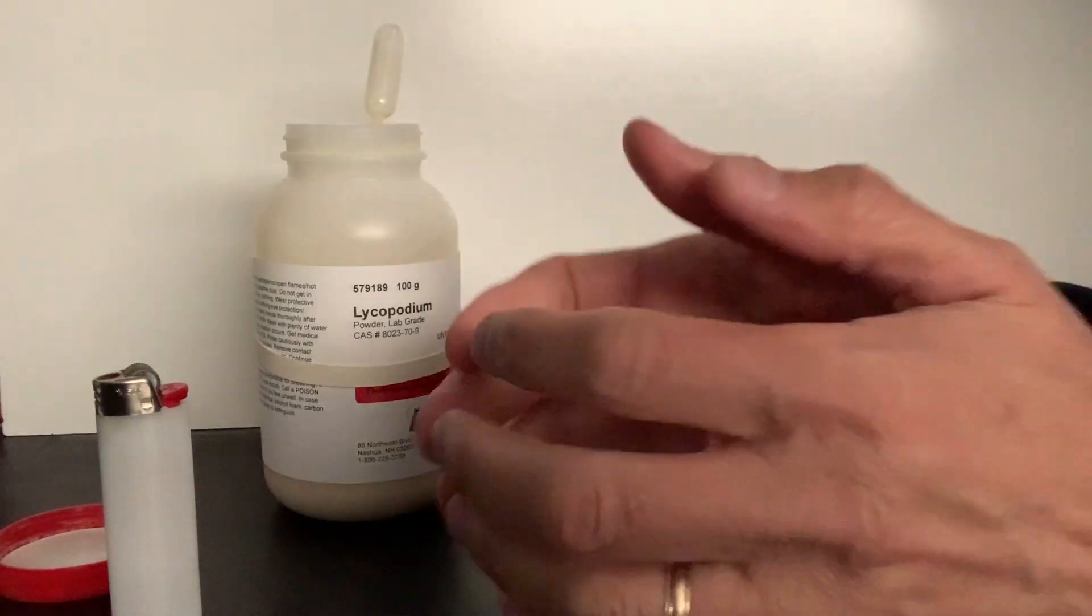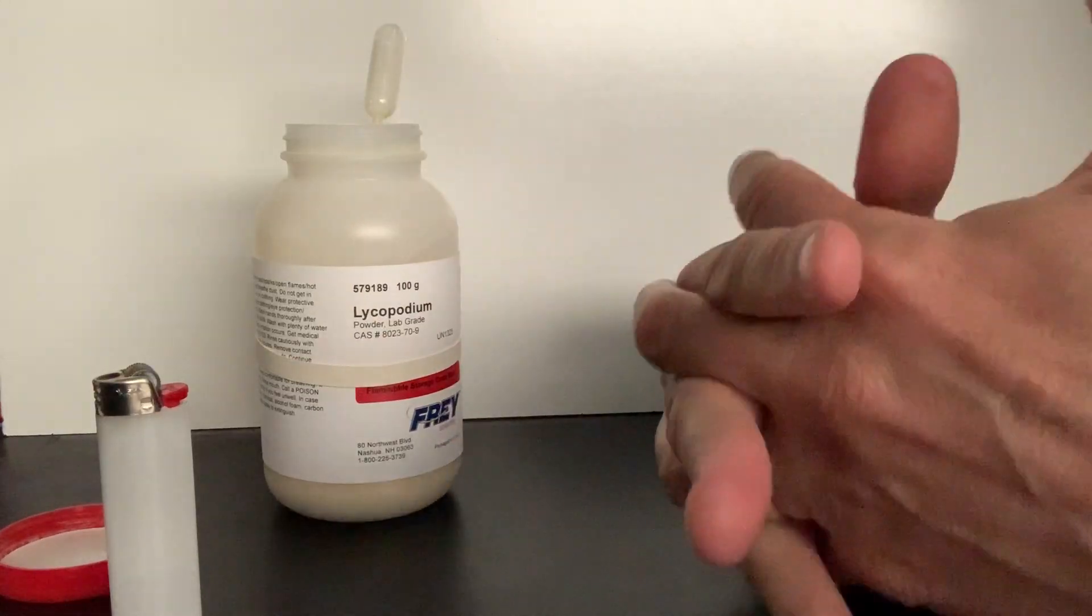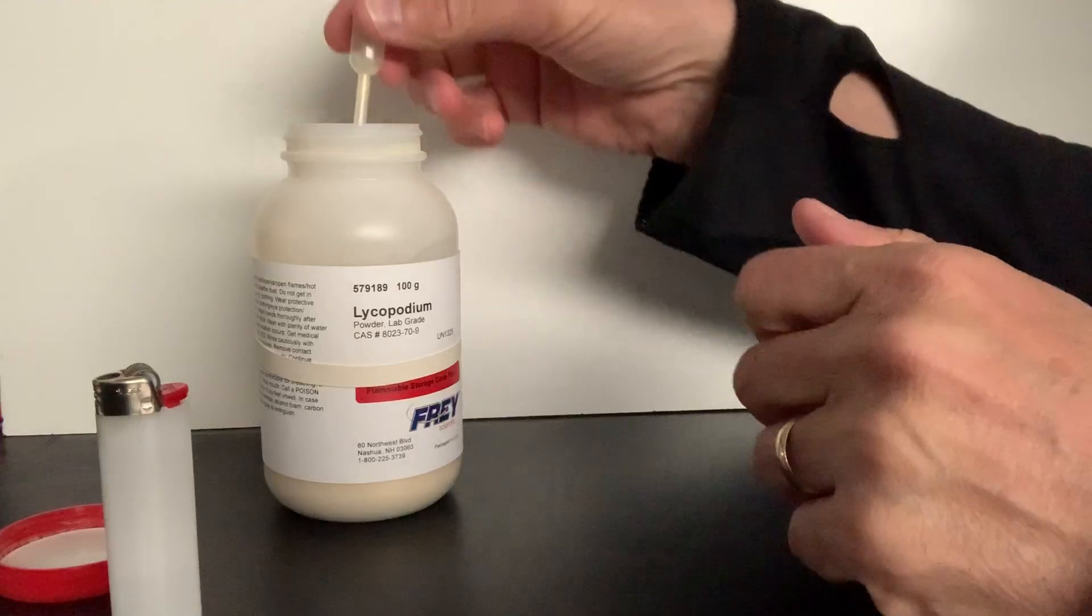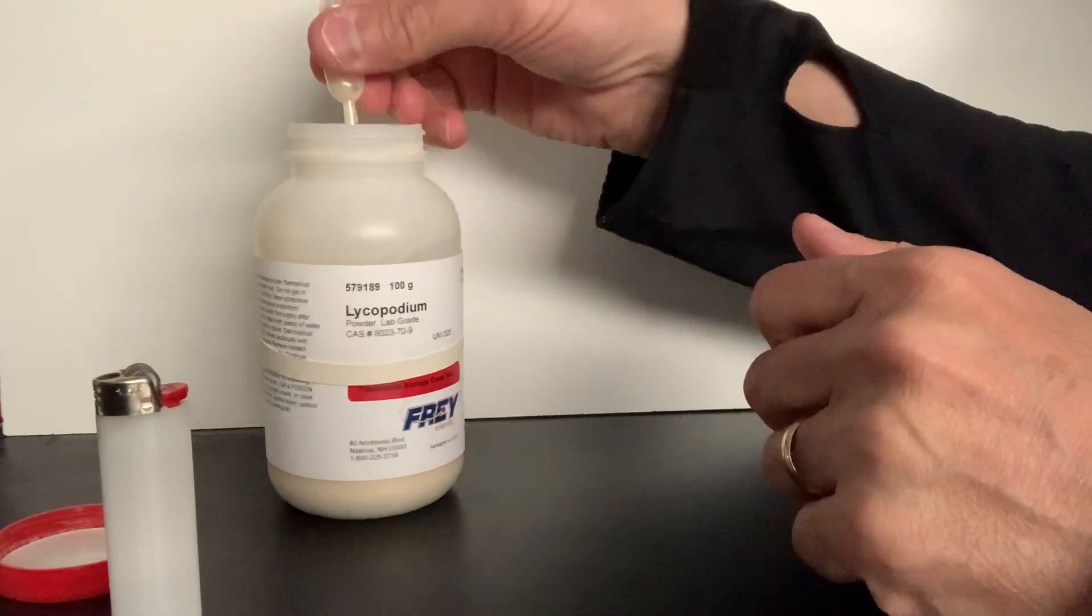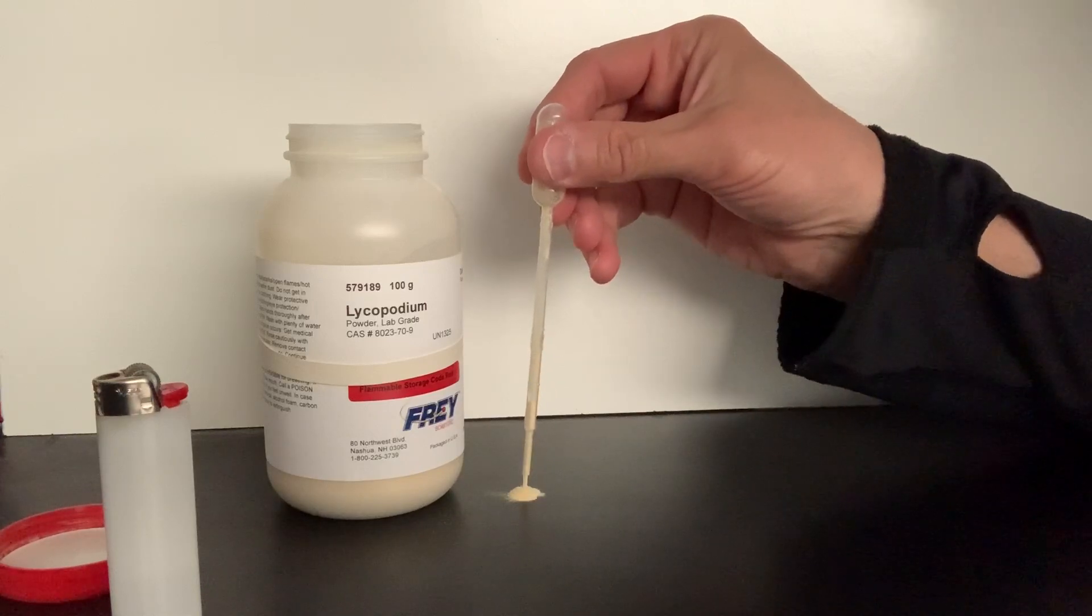So, the availability or the ability for them to interact with each other is crucial in the rate or the speed of a chemical reaction. Let me illustrate this with a very simple demonstration. I have some lycopodium powder here, which is flammable, and I'm going to place a small amount on my desktop.